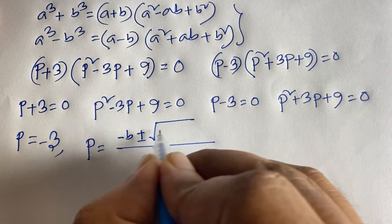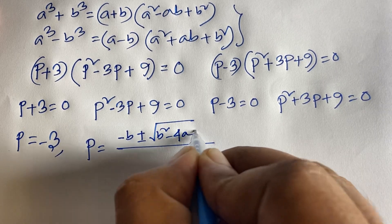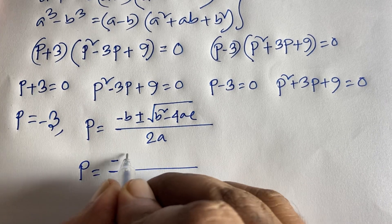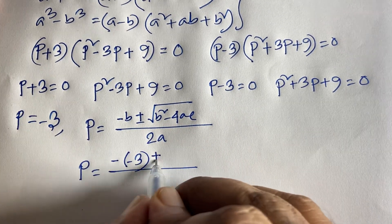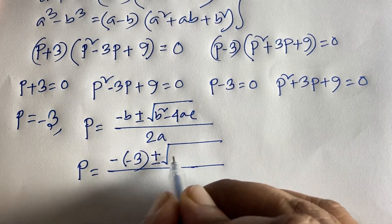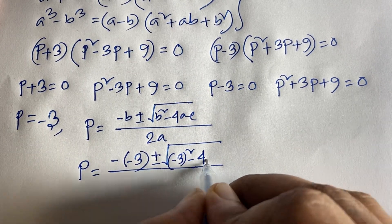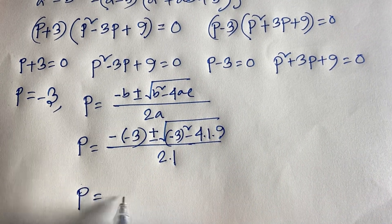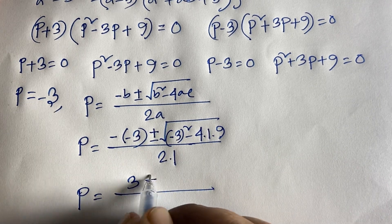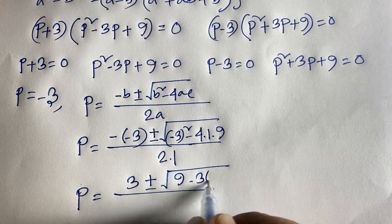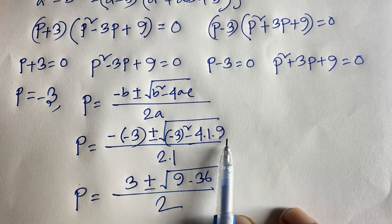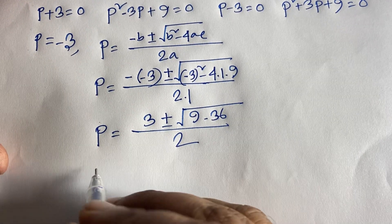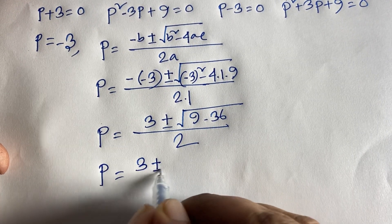Applying the quadratic formula p = (−b ± √(b² − 4ac)) / 2a to p² − 3p + 9 = 0, where a = 1, b = −3, c = 9: p = (3 ± √(9 − 36)) / 2, which gives p = (3 ± √(−27)) / 2.